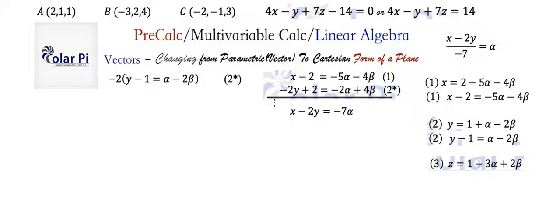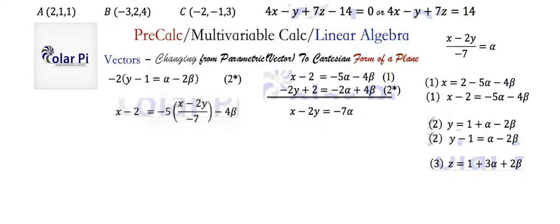Solving for alpha from that combined equation gives us alpha in terms of x and y. Now, going back to the alternate version of equation one and substituting for alpha with what we just found, we can solve for beta in terms of x and y as well. Notice that in the resulting equation, in the numerator, we can write 2y minus x to bring out a negative, and then cancel that negative with the negative in front of the 7, so that what's in the parentheses is a positive expression.